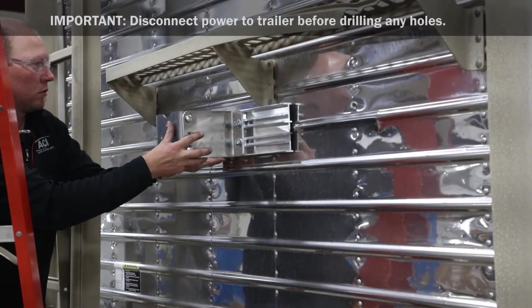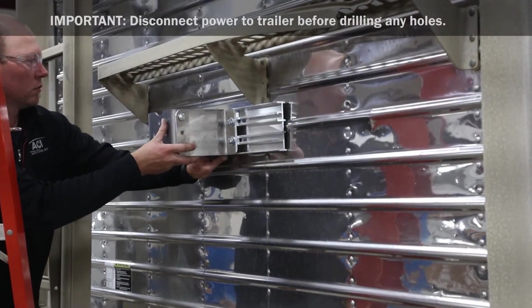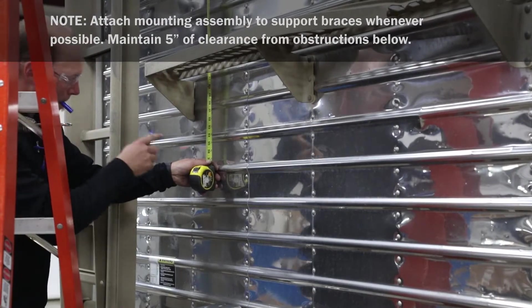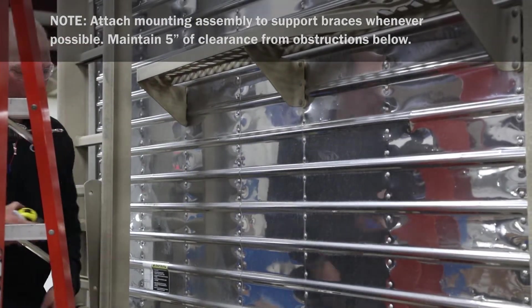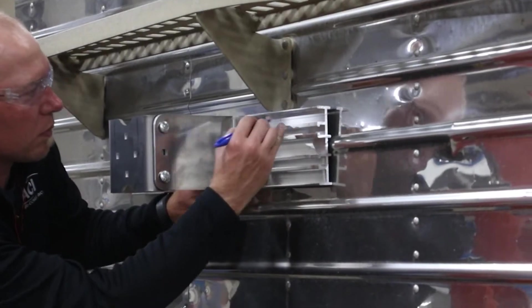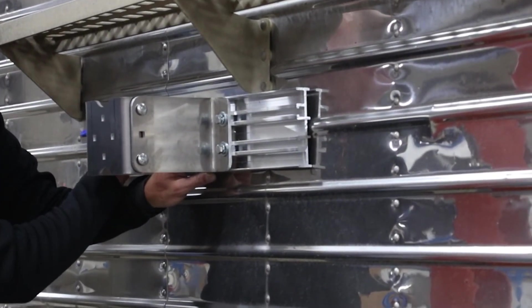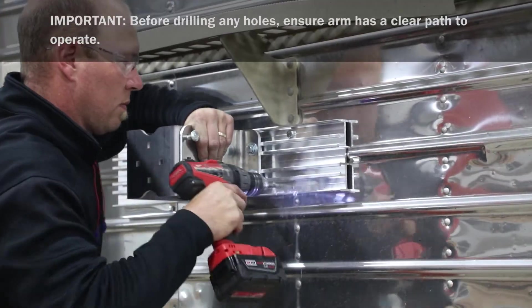At rear of trailer, align center point of mounting assembly with centerline of box. Measure down 47 to 55 inches from top of end cap and mark holes in top and bottom groove. Drill holes at marked locations.